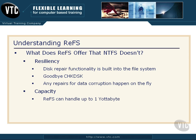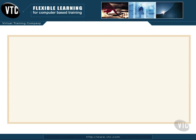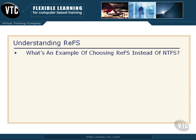And then capacity. ReFS can handle up to 1 yottabyte. You've probably never heard of a yottabyte — I hadn't either. That's about 1 quadrillion gigabytes. It's an unbelievable amount of data. Another way to represent this: 1 gigabyte can be represented as 10 to the 9th power. 1 yottabyte is 10 to the 24th power. So you binary nerds have a picture there of exactly what's going on with the size.